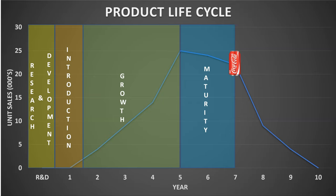Common strategies during the maturity stage include managing production levels to ensure the business doesn't over-produce, whilst distributing the product to more businesses and retailers to reach a wider audience, commonly with a lower price tag.